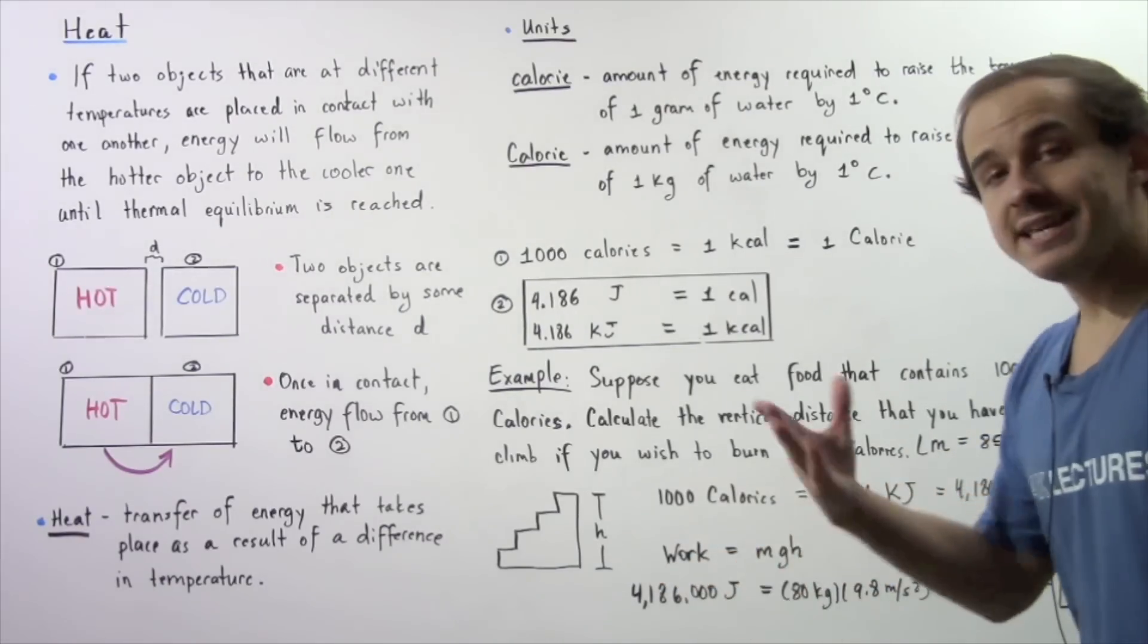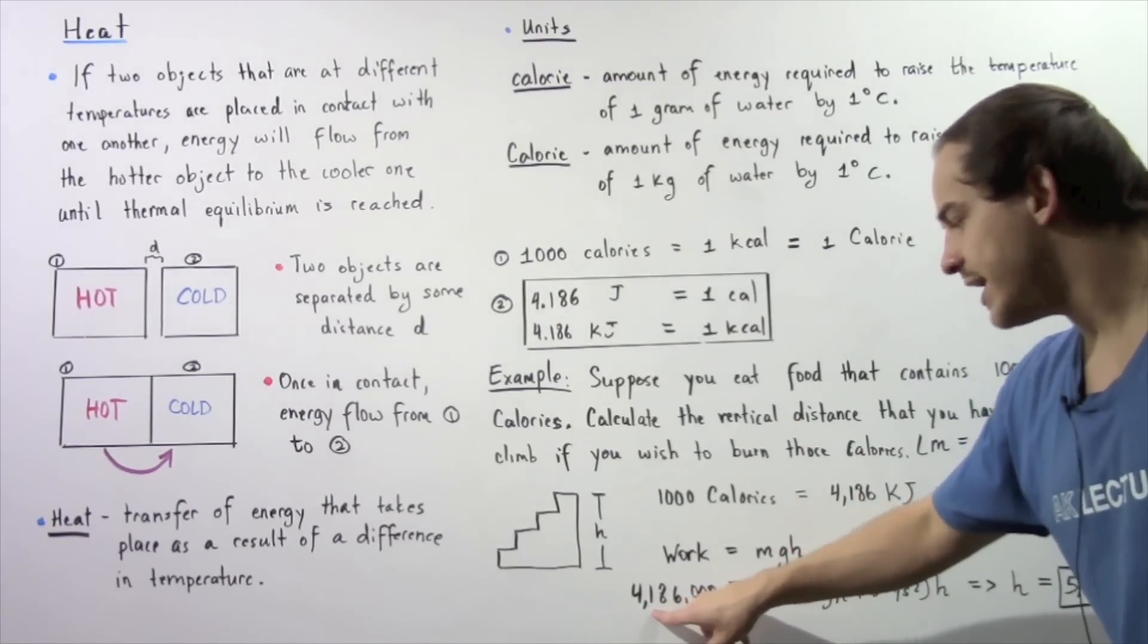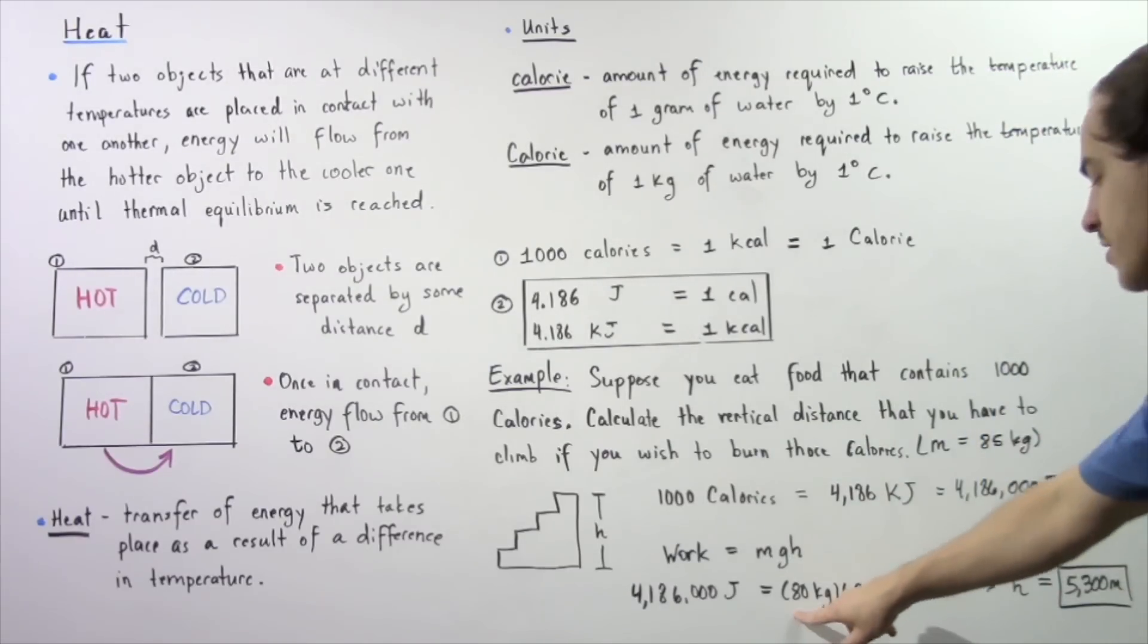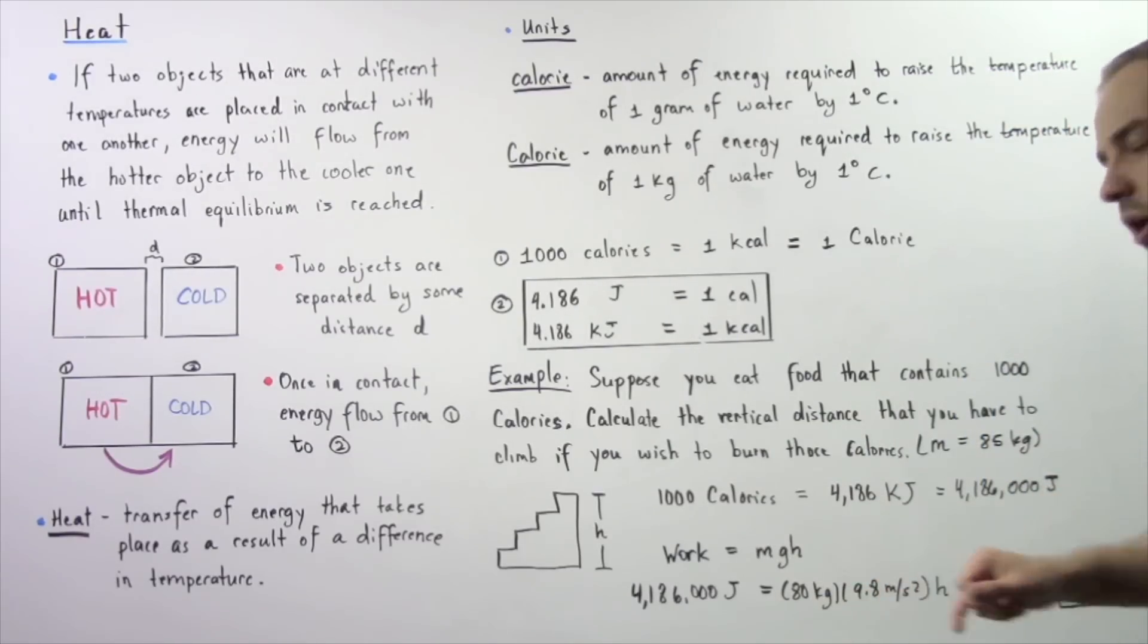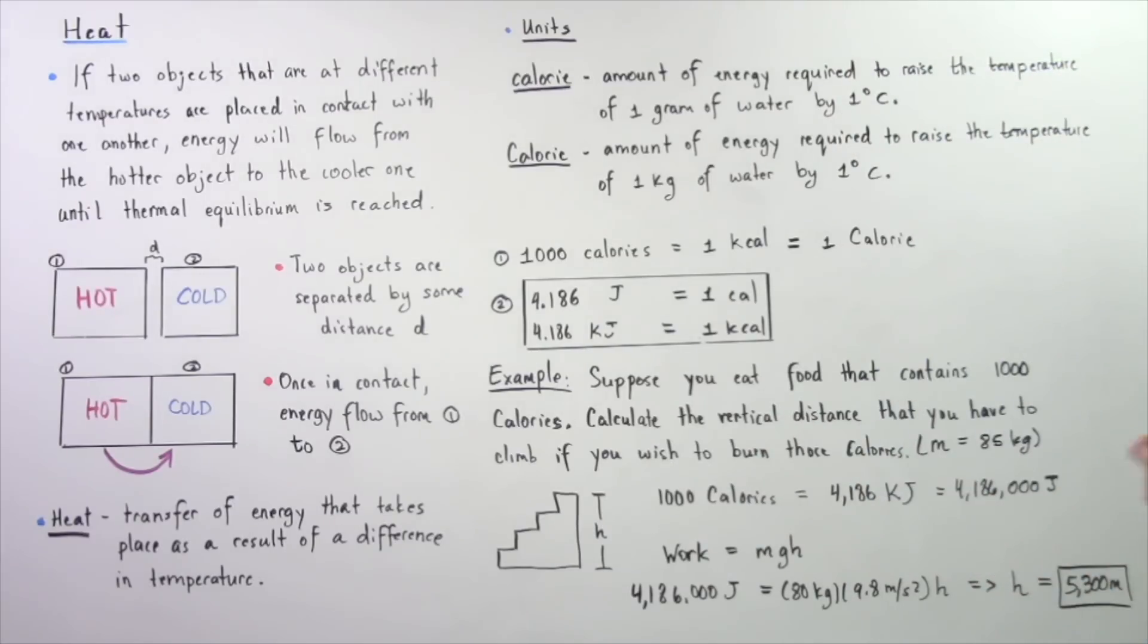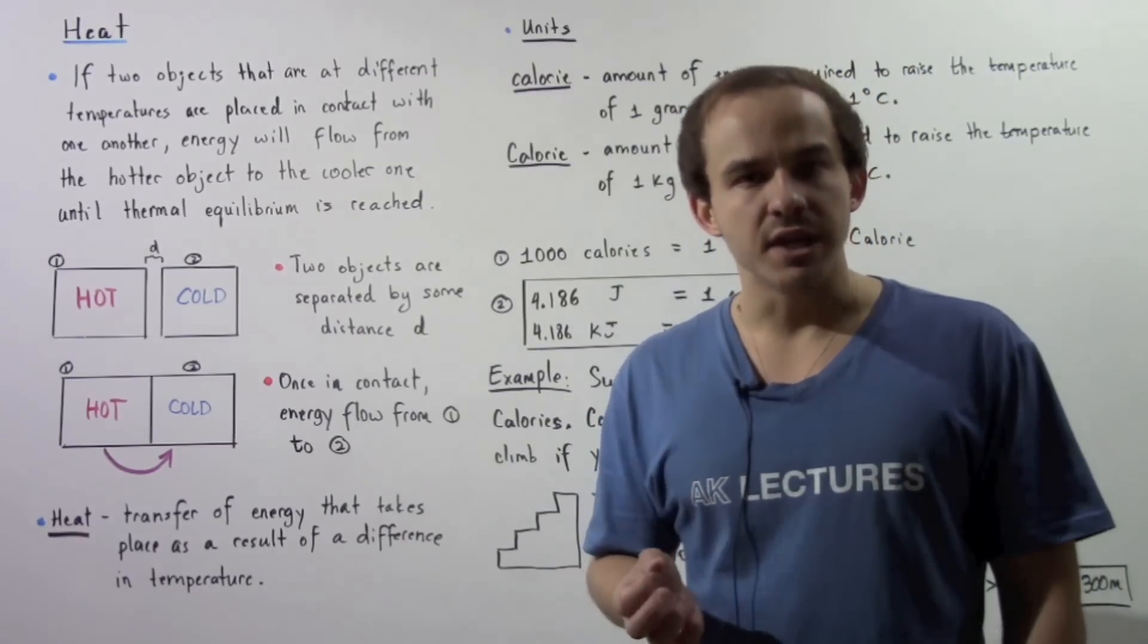The work is equal to this amount of energy. So we have 4,186,000 joules of energy divided by the product of 85 and 9.8, and that gives us the height. The height is about 5300 meters, which is about 12 times the height of the Empire State Building.